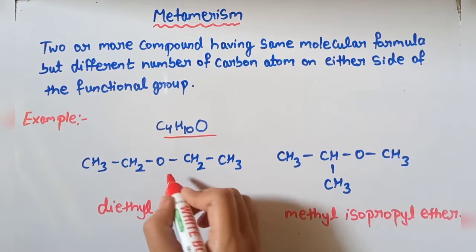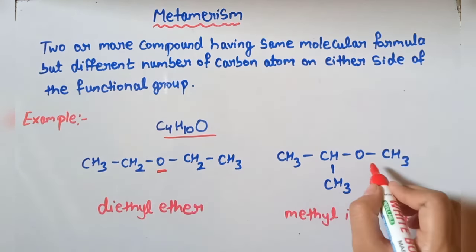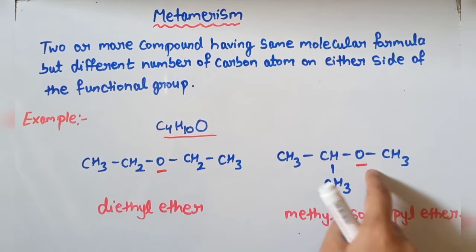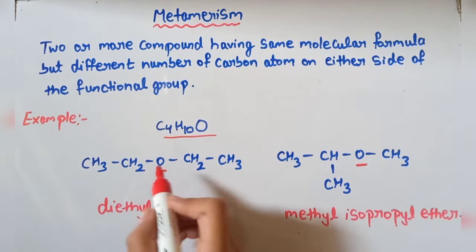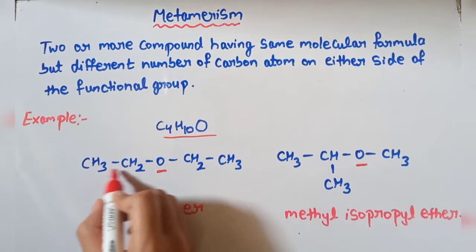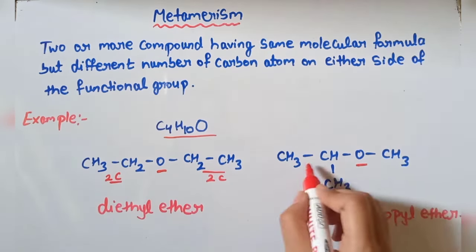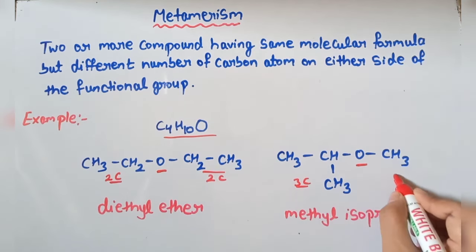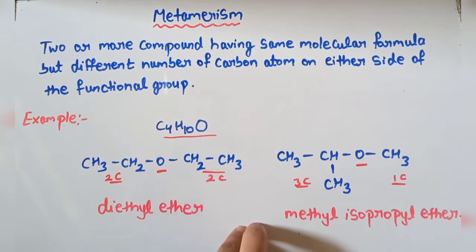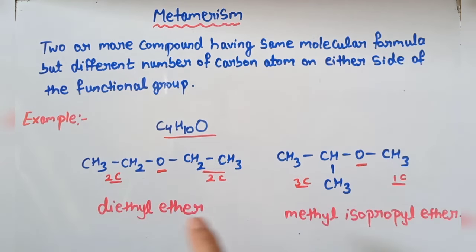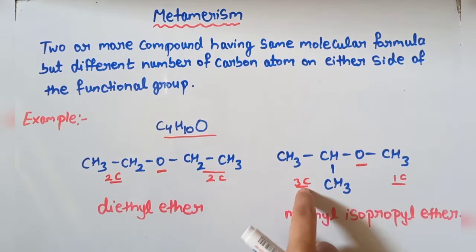The functional group present in both compounds is O, that is ether. The difference is on either side of the functional group. In the first compound, on the left side there are two carbons and on the right side also two carbons. But in the second compound, on the left side there are three carbons and on the right side there is only one carbon. So both compounds have the same molecular formula, but the number of carbon atoms on either side of the functional group is different. This type of isomerism is called metamerism.